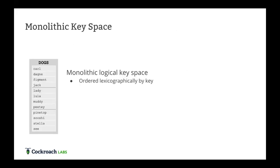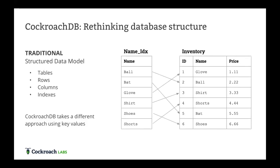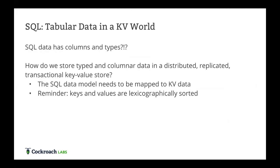Every table in CockroachDB can be thought of at the storage layer as a monolithic logical key space — everything ordered. Here's a dogs table, ordered alphabetically by name. A typical database just keeps adding records to a table and sets up indexes as separate meta-tables. We don't need that because we order everything based on key. The keys are all ordered in CockroachDB, which is different from a typical database structure like Postgres, and allows us to do some really cool things.